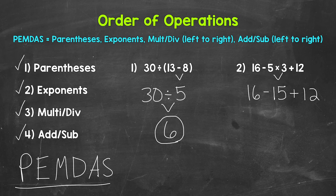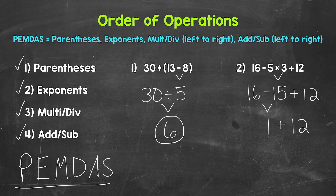Any addition or subtraction? Yes, we have both addition and subtraction. Since we have both, we need to work from left to right — addition and subtraction are on the same level, the same priority. So we work left to right, doing subtraction first: 16 minus 15 is 1. Bring down plus 12, and now we have 1 plus 12. 1 plus 12 is 13, and that is our final answer.